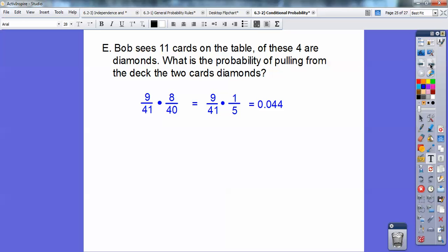So there's 11 cards on the table, which means there's 41 cards left in the deck. There's 9 diamonds left out of 41 cards. And then the next pull is going to be 8 diamonds out of 40 cards, because it's 1 less. And then I went ahead and reduced this 8 over 40 right here. We get 0.044. And that's all.